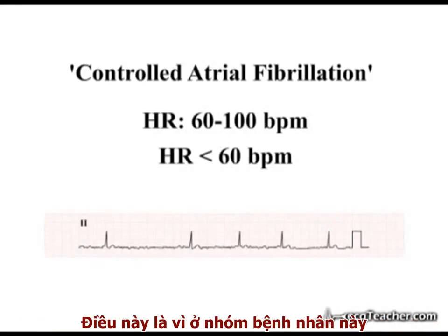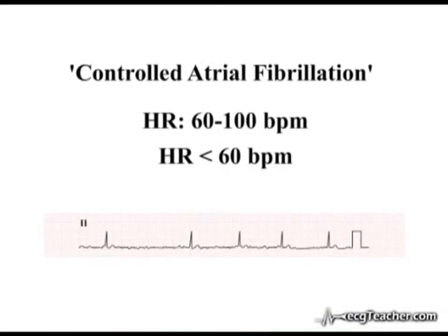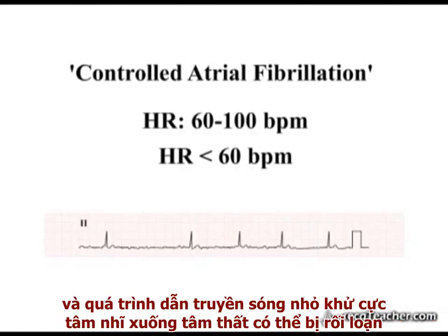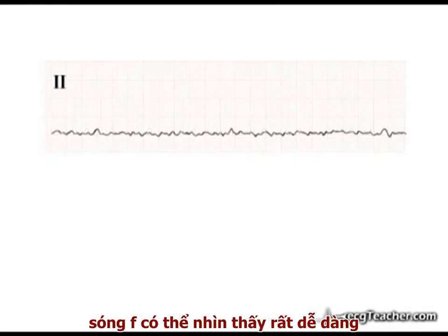This is because in this age group, atrial fibrillation is frequently associated with significant underlying heart disease. In this situation, the AV node may be diseased, and transmission of atrial depolarization wavelets to the ventricles impaired. As in this example, F-waves may be quite prominent.